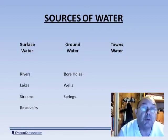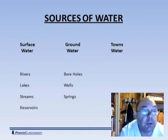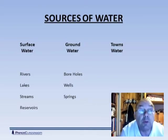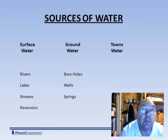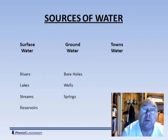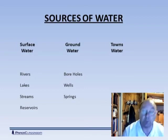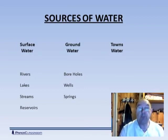Surface water is stuff that you can see — rivers, lakes, streams, reservoirs. Groundwater: how do we get groundwater out of the ground? We use boreholes, we use wells, or we use springs.